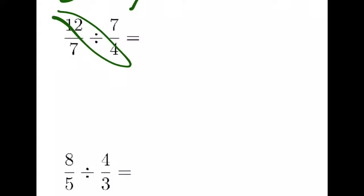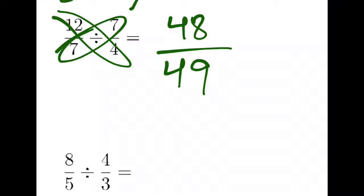12 times 4 is 48. 7 times 7 is 49. The only factors of 49 are 7 times 7. 7 does not go into 48. We cannot simplify this fraction. That's the final answer.